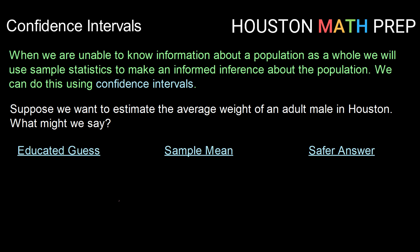When we're unable to know information about a population as a whole, we need to rely on samples. What we're going to do is take sample statistics, let's say maybe the mean or the proportion of something that is true, and we're going to use a process to make an informed inference about the population based on that sample. One way that we can do this is by using a confidence interval.